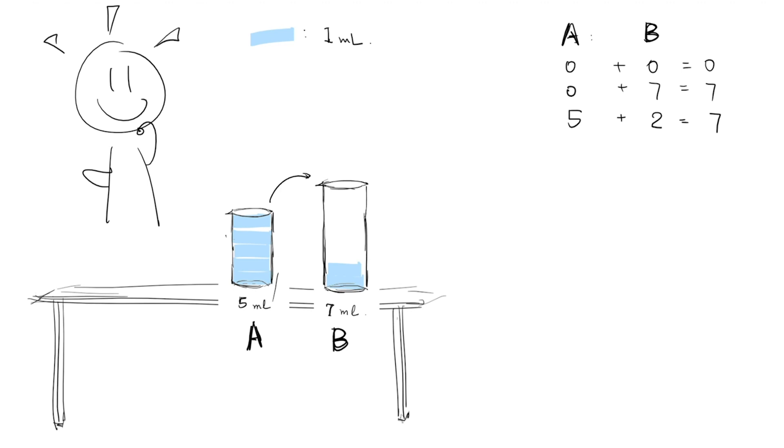Obviously transferring the water from A back to B does no good, as it's reversing what we had just done. Emptying B is no good either. Therefore, let's empty A. 0 plus 2 is 2. After emptying A, let's transfer the two milliliters of water to A. And to repeat the process, we fill up B again. 2 plus 7 is 9.